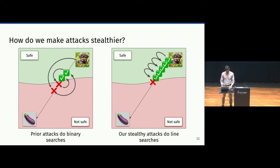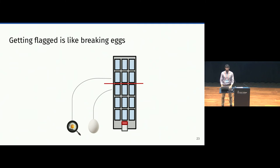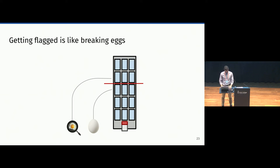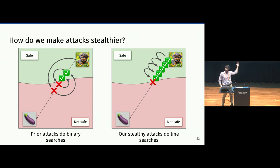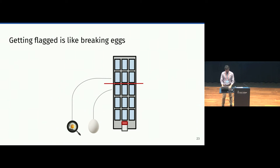So we swap these binary searches with line searches. In this way, we're guaranteed that only one flagged query is going to be issued, of course at the cost of more non-flagged queries. This reminded us of the egg dropping problem, where one is given a building of n stories and a fixed number of eggs, and you have to establish from which floor eggs are going to start breaking when dropped. We want to do this without using more than the given number of eggs, while also minimizing the number of drops. In the paper we consider the case of one egg, but also generalize to two or more eggs depending on the use case.